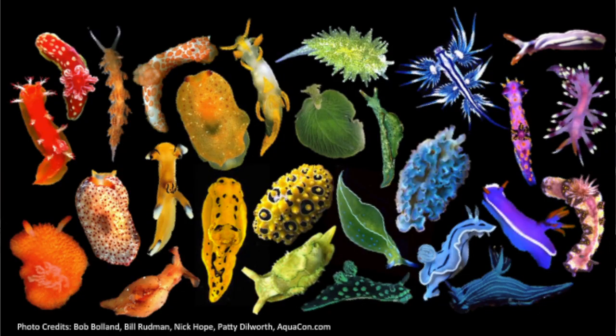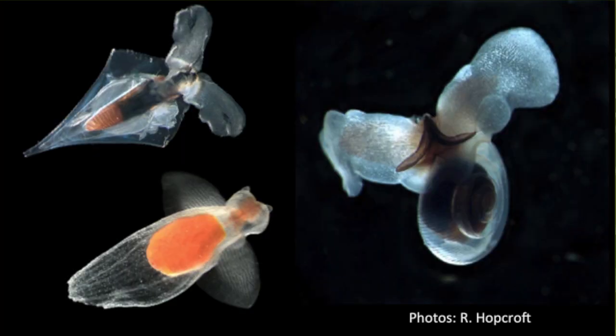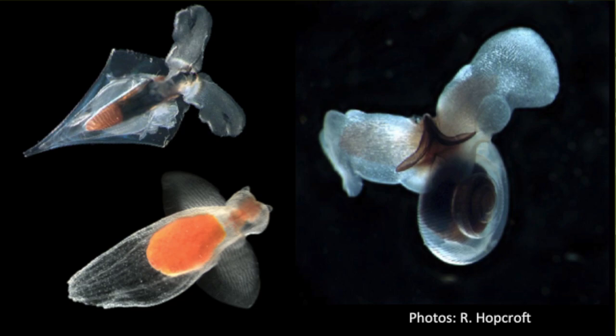Sea slugs come in all different shapes, all different sizes, and basically every color of the rainbow. They can be found in every ocean from the seashore to the depths. Some even spend their entire lives swimming and aren't really slug-looking at all. Some live in the sediments and some even live in the polar sea ice.